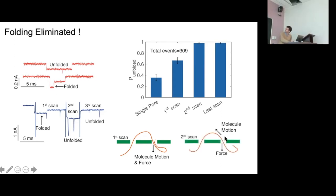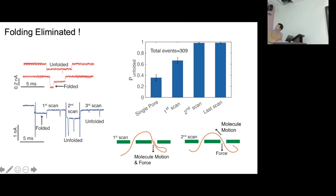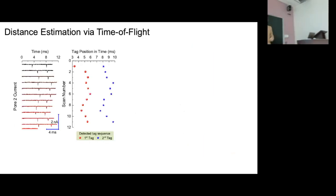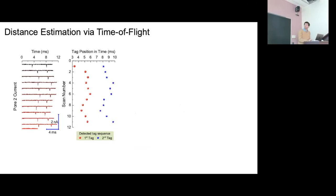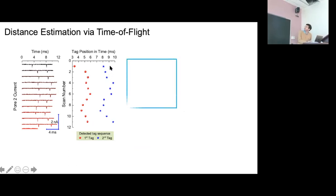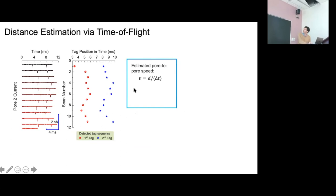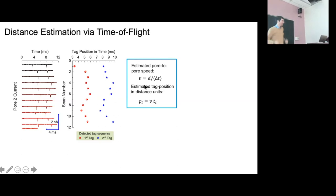This works because on the first scan, imagine we drive a fold into reservoir two. When we reverse the bias direction, the force at pore two acts opposite to the molecule's motion, tending to yank out these folds at the point of the second scan. We can use our velocity estimate to obtain a measure of correspondence between the time domain and the sequence domain.